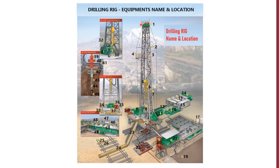Number 1 is the crown block assembly. Number 2 is the cat line boom. Number 3 is the drilling line, which is threaded through the crown block and traveling block pulleys and sheaves. Number 4 is the monkey board, also called the derrick board — this is the elevated platform where the derrick man stands and handles tubulars and drilling pipes during tripping.